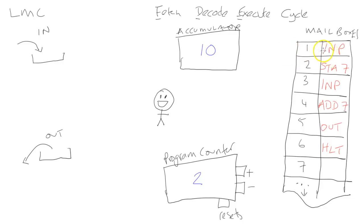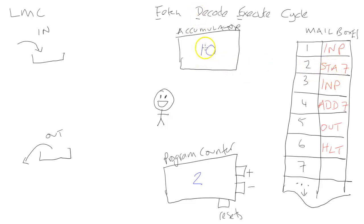So he's fetched an instruction from the mailbox, decoded what it says — input — and executed that command by putting the value into the accumulator. Program counter goes to two. He walks to position two, sees the instruction 'STA' — store accumulator — which means store the value in the accumulator into mailbox seven. He copies the number 10 and stores it into position seven, then increments the program counter to three.